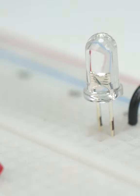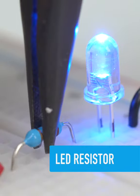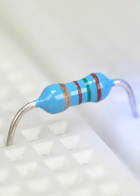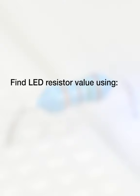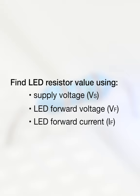To avoid damaging an LED, we limit the amount of electrical current flowing from its power source using a resistor. You can find the right resistor value for your LED using your circuit supply voltage, the LED's forward voltage, and the LED's forward current value.